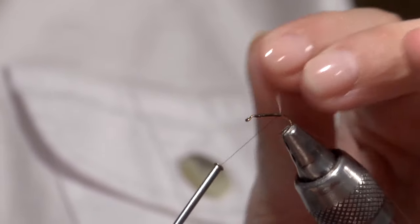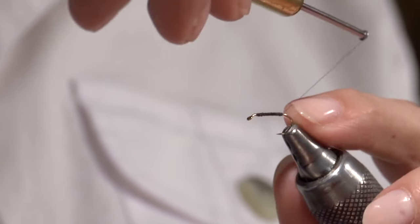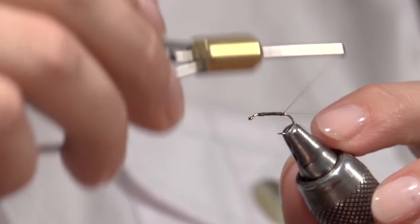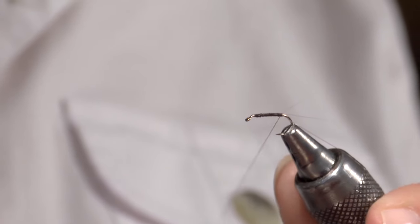And I want to split this tail. So I want to bring my thread up between these two little fibbits to kind of fork it. Okay, and keep good tension on my thread.